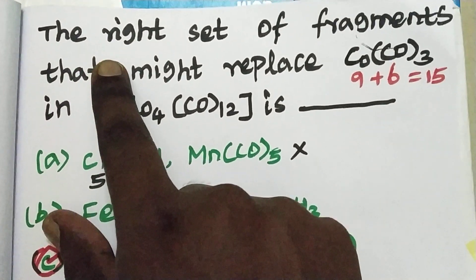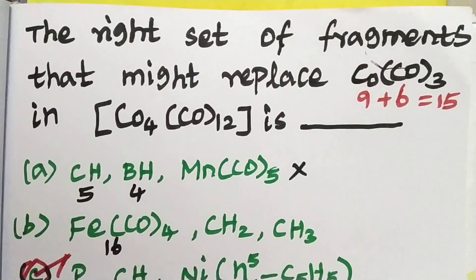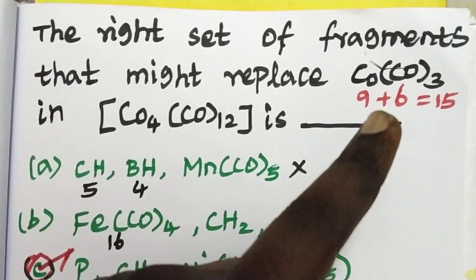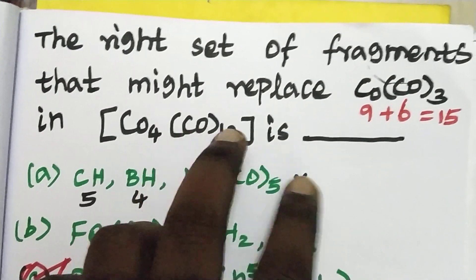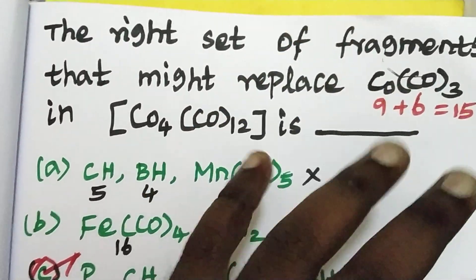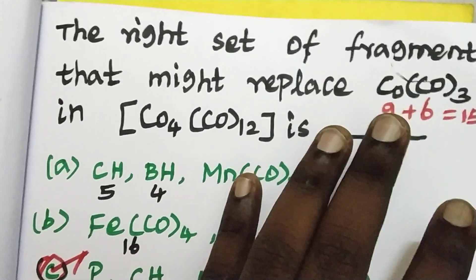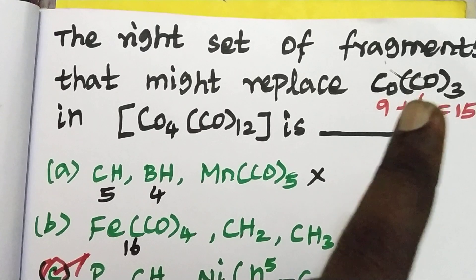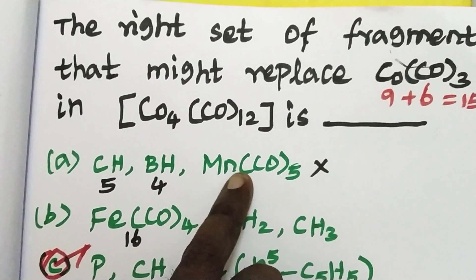Next question: what is the right set of fragments that might replace CO in CO3? We are looking at which fragments — CO2, CO3, or others — can substitute CO in CO4 or CO12. These are the components that may replace CO, which will be isolobal with the carbonyl fragment.